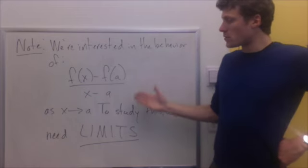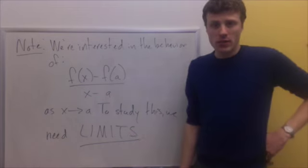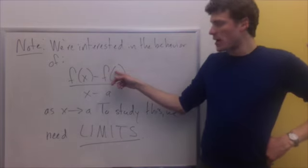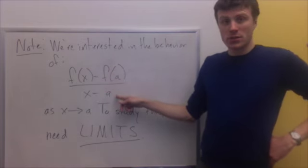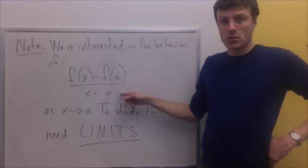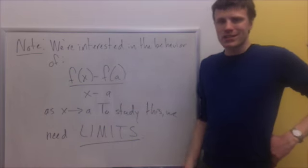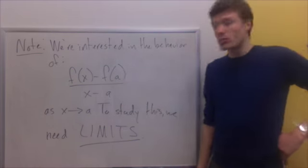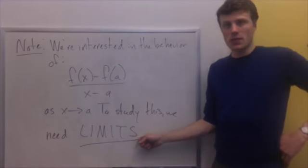To study this sort of thing, I can't just plug in x equal to a, because I get f of a minus f of a over a minus a — I get 0 over 0. That's a problem. So to study something like this, we need to introduce some new machinery, and that is the topic of the rest of chapter 2: limits. So let's take a look at the next step.